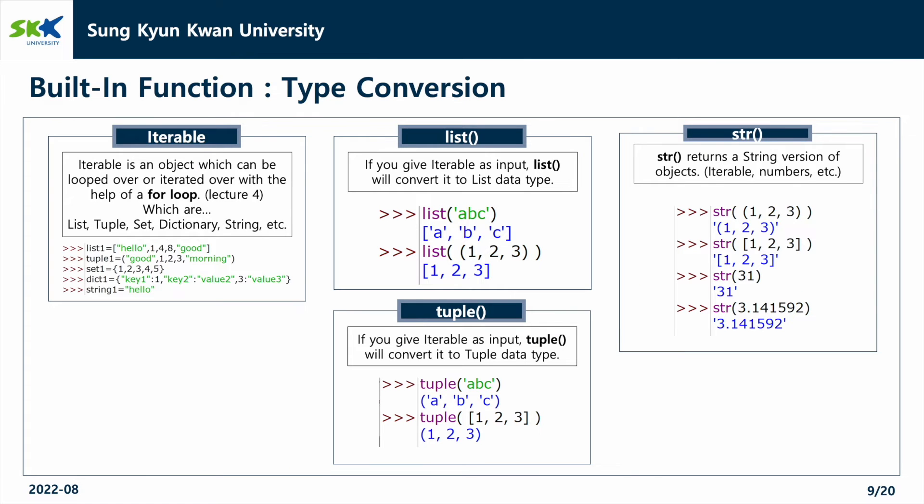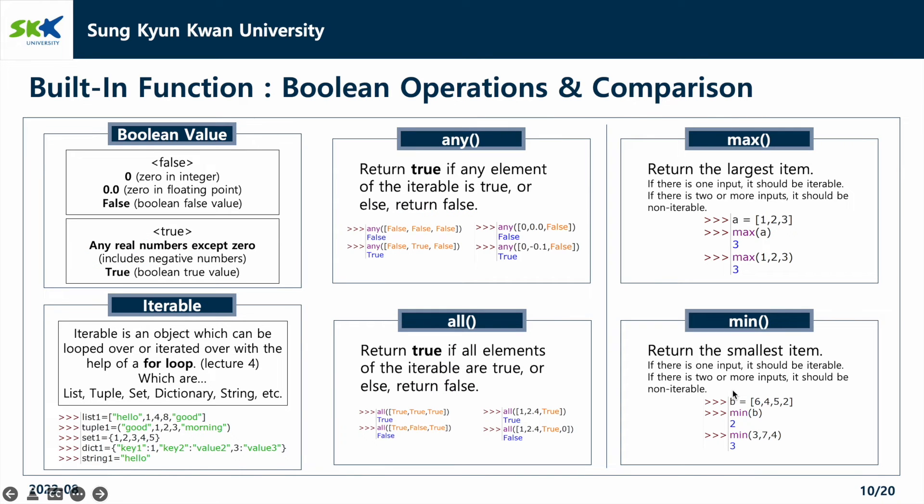Iterable is an object which can be looped over and iterated over with the help of a for loop. For example, list, tuple, set, dictionary, and string are included here. The list, tuple, and string functions change the input values to list, tuple, and string data types. There are functions using the boolean value and iterable that we learned earlier. First, any function returns true if any element of the iterable is true or else return false. Second, all function returns true if all elements of the iterable are true or else return false. Third, max function returns the largest item. Finally, min function returns the smallest item.